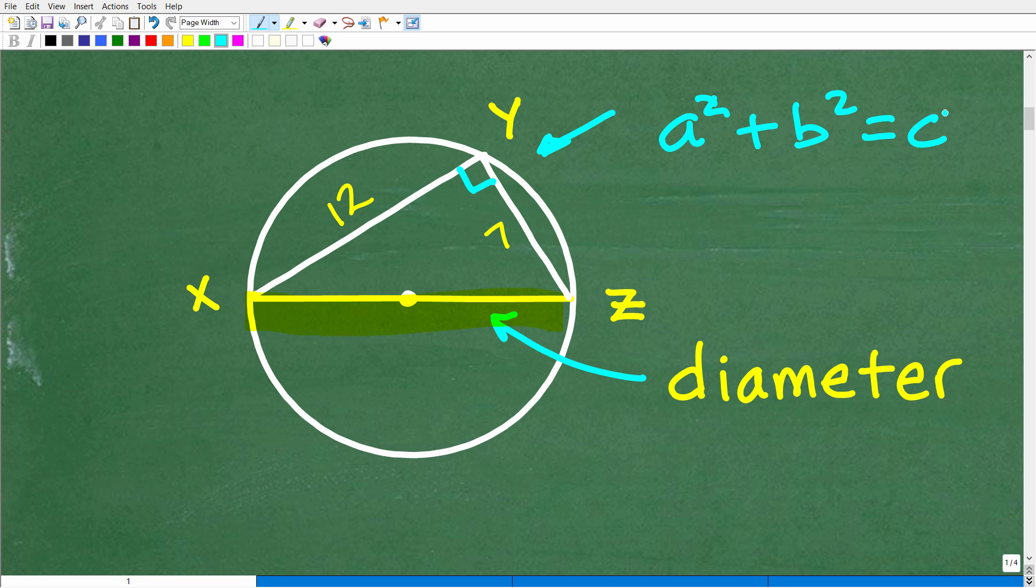A squared plus b squared is equal to c squared. We can get this side right here, divide by 2, and voila, we have the radius. But I do not know whether, in fact, this is a right triangle. So we cannot make that assumption.